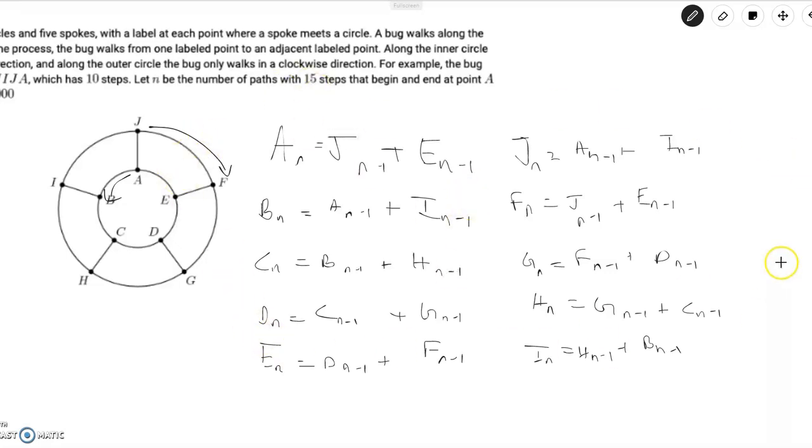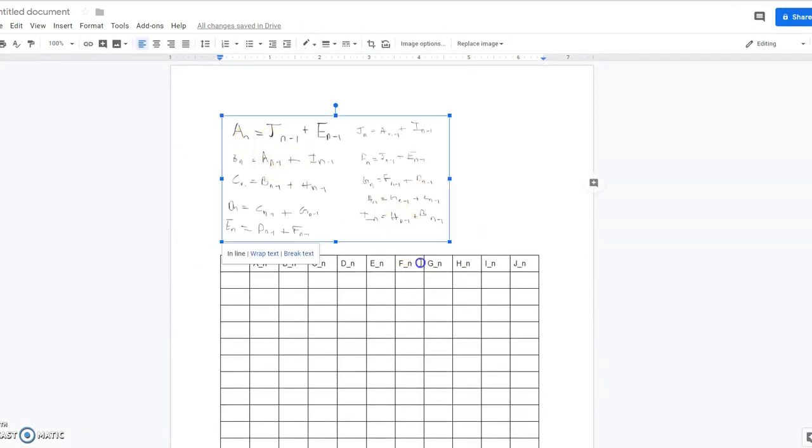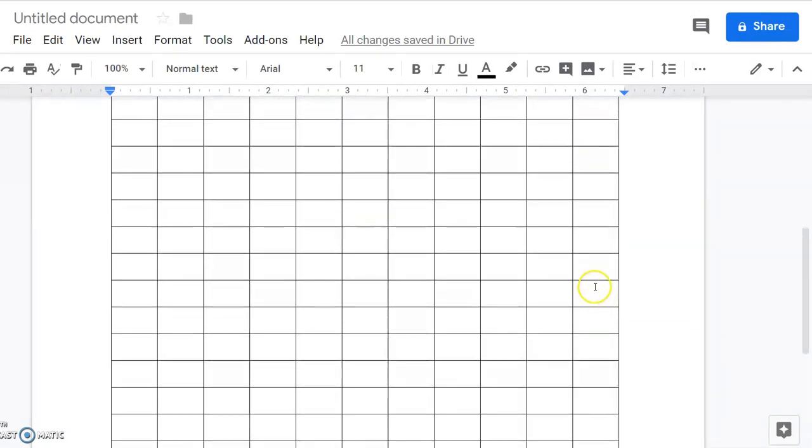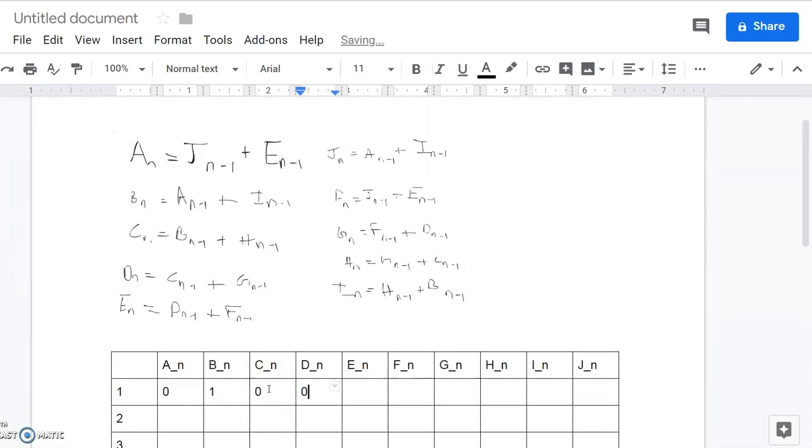So, over here we have all our recursions and so we know that the values that we compute at the previous step will directly affect the values that we get at the next step. So, with that we can just use our initial condition in order to find the number of ways to reach back to A in 15 steps. So, over here I've created a document and you have the recursions over here and so we can create a 15 row by 10 column table and each column would be A of n till J of n while each row would be n equals 1 through 15. So, after one step there's zero ways to get to A because you can't go back to A. There's one way to get to B. There's going to be 0 to C, 0 to D, 0 to E, 0 to F, 0 to G, 0 to H, 0 to I, and 1 to J because you can go from A to J.